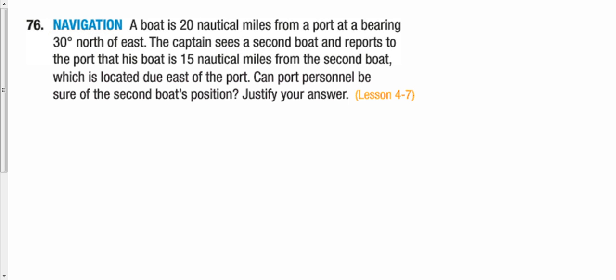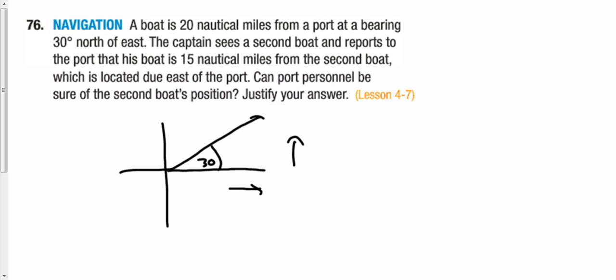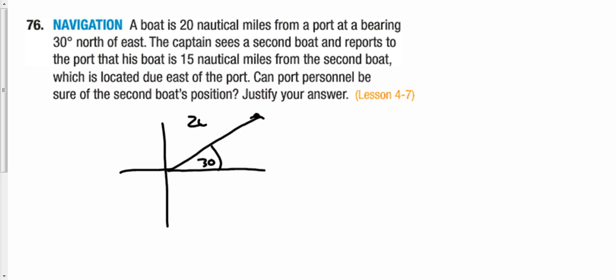Next problem: a boat is 20 nautical miles from a port at a bearing 30 degrees north of east. On a graph, the boat is going 30 degrees north of east, and this length of 20 nautical miles goes from the port to the boat.